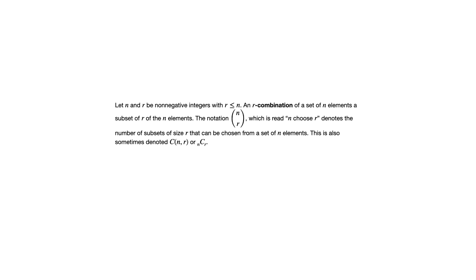And there's some alternative notation given here. The formula, which we first saw in chapter 5, is n factorial over n minus r factorial times r factorial.